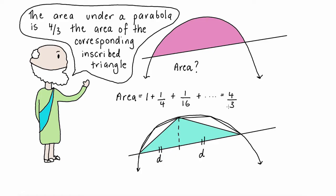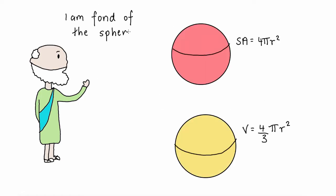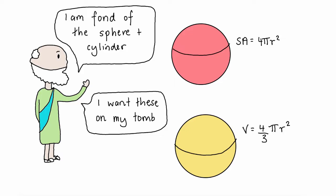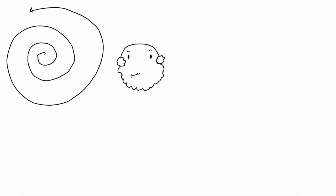Archimedes was also the very first to find the tangent to a curve rather than just a circle, using a method that started to resemble differential calculus when studying the spiral known today as the Archimedes spiral.